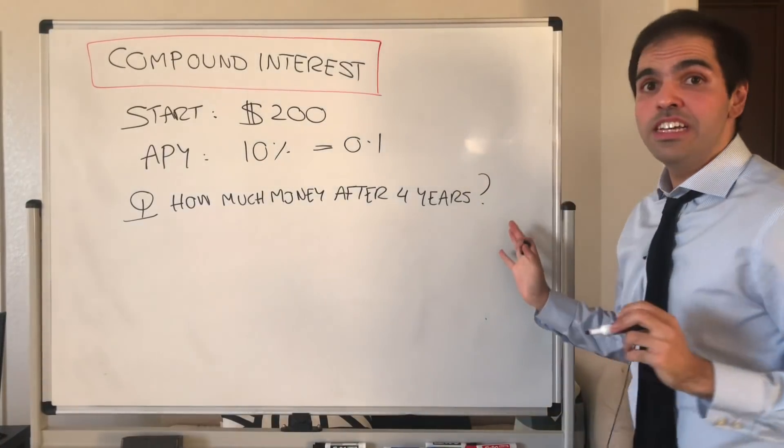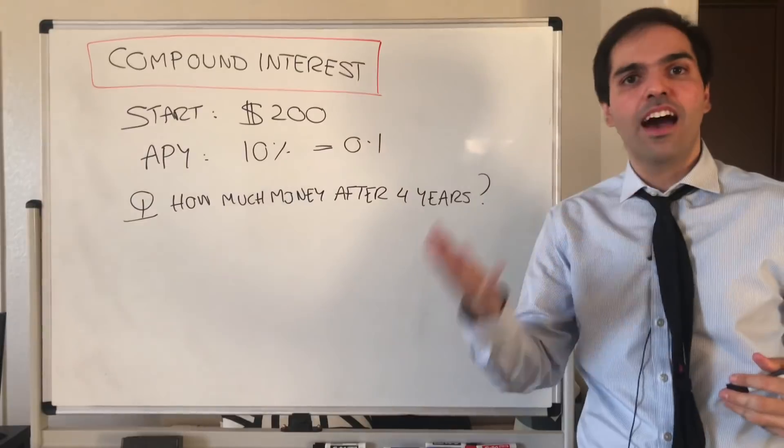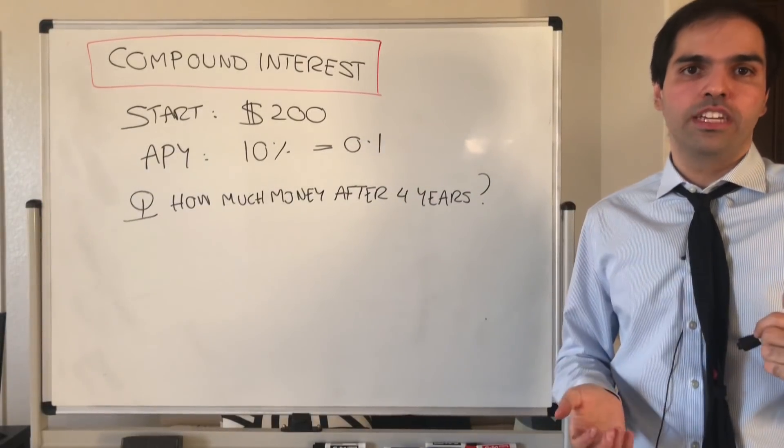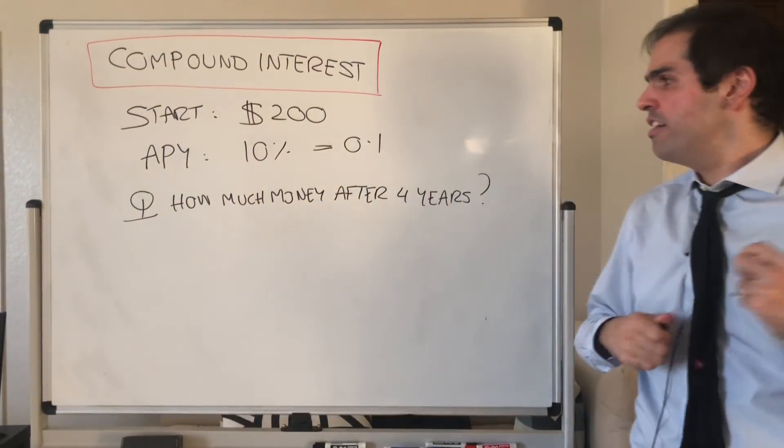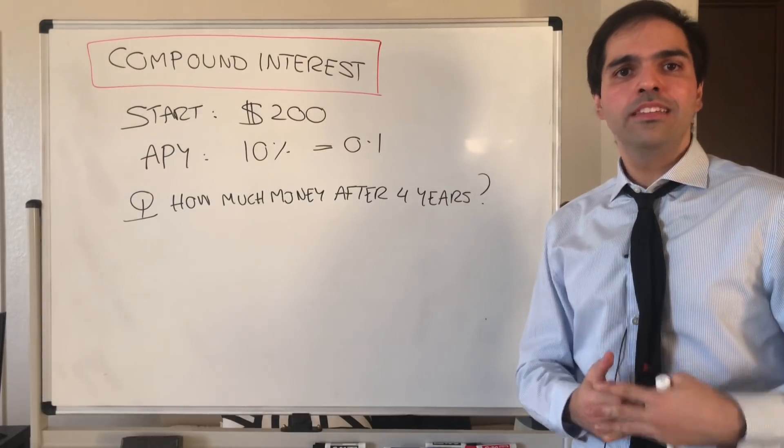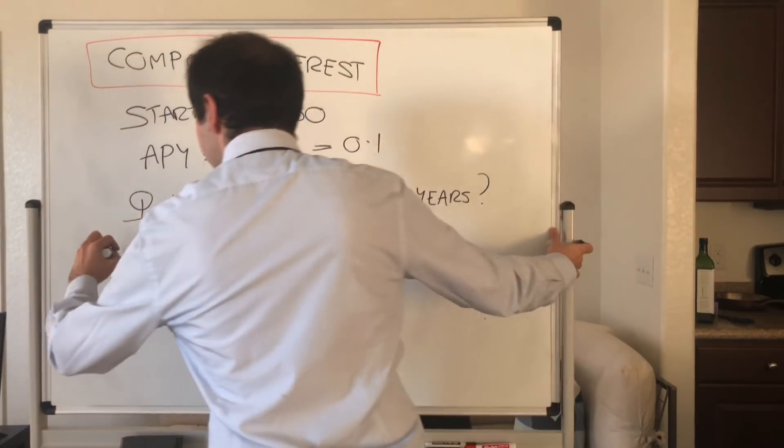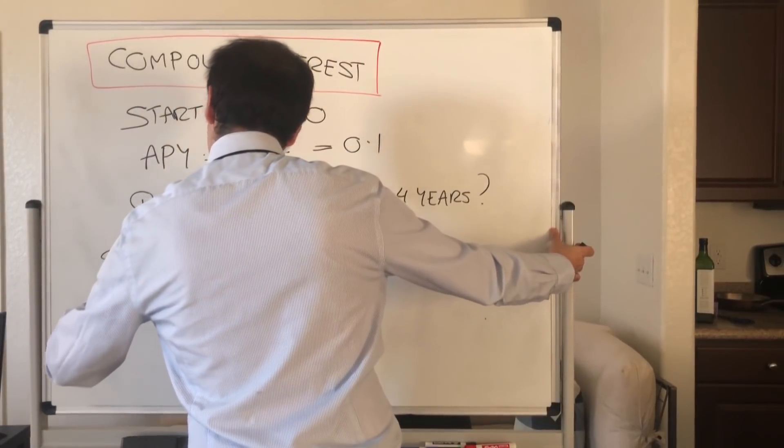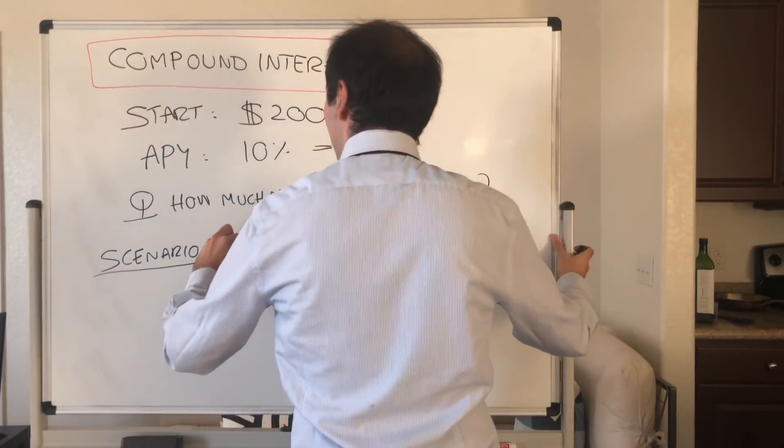And the answer is, it depends. It depends on how many times we actually give you interest. So there are a bunch of different scenarios which are very important to understand. Suppose I'm doing something simple, which means just taking interest once per year. So scenario one, that's what's called compounded annually.